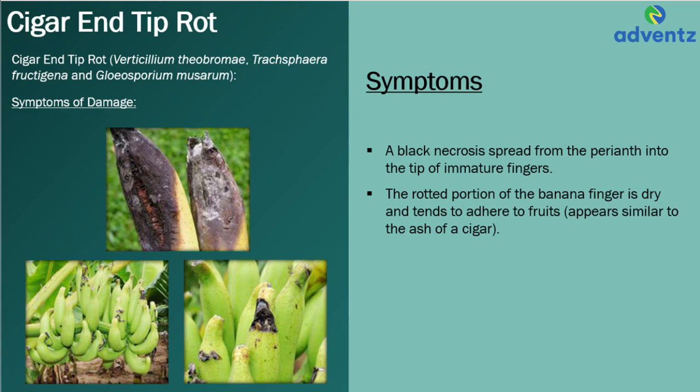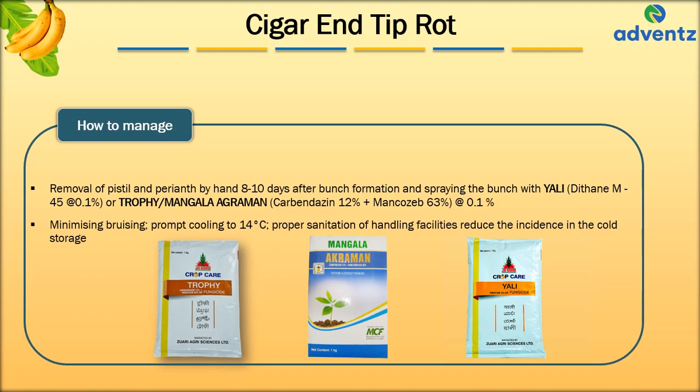The control measures of Cigar End-Tip Rot are: removal of pistil and perianth by hand 8–10 days after bunch formation, and spraying the bunch with Dithane M45 at 0.1%, or Trophy or Mangala Agraman (Carbendazim and Mancozeb) at 0.1%, controls the disease effectively. Minimizing bruising, prompt cooling at 14 degrees Celsius, and proper sanitation of handling facilities also reduces the incidence in cold storage.